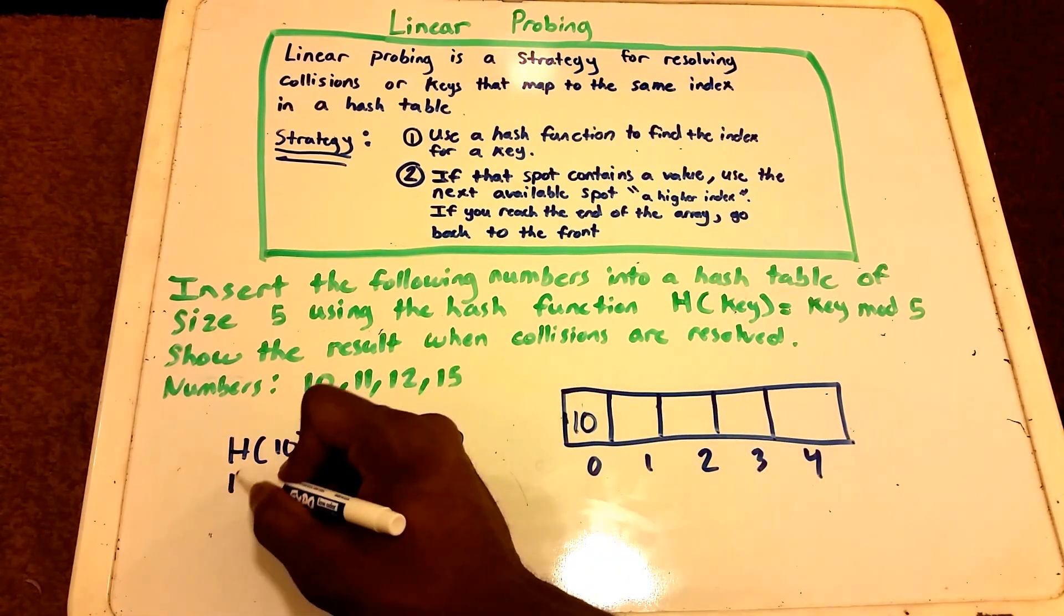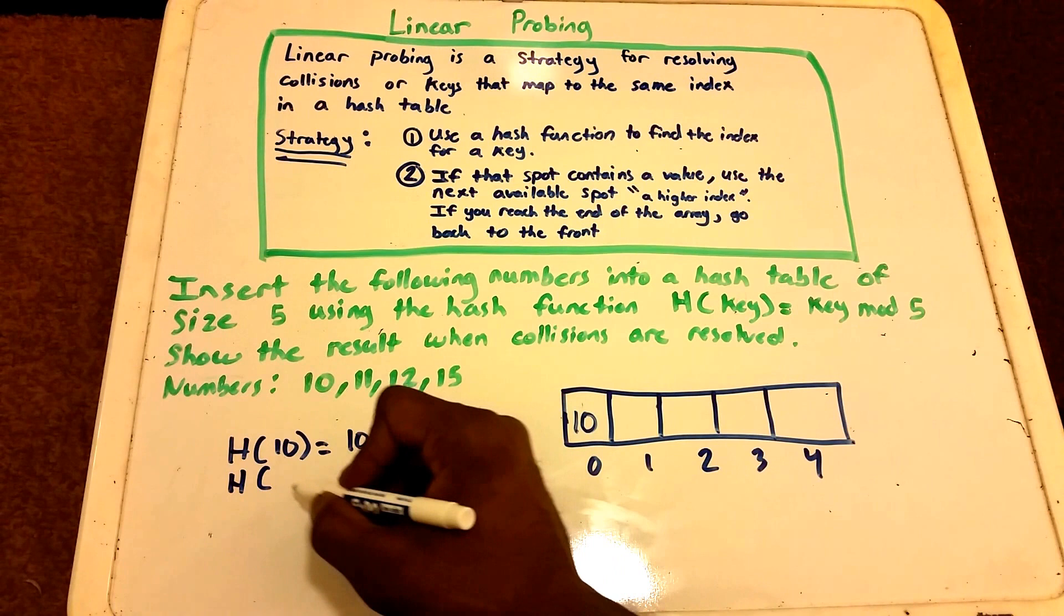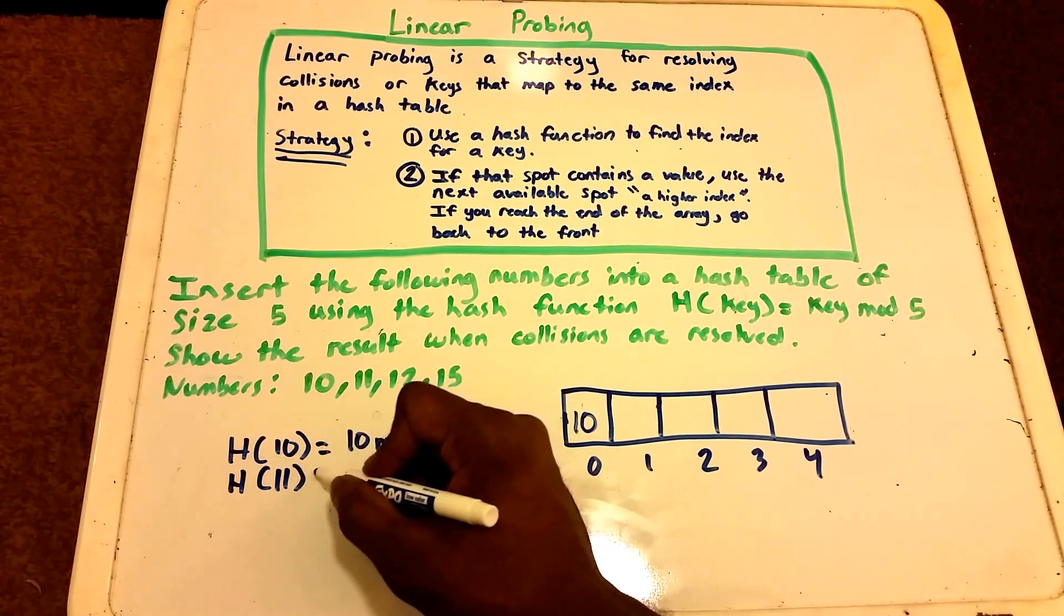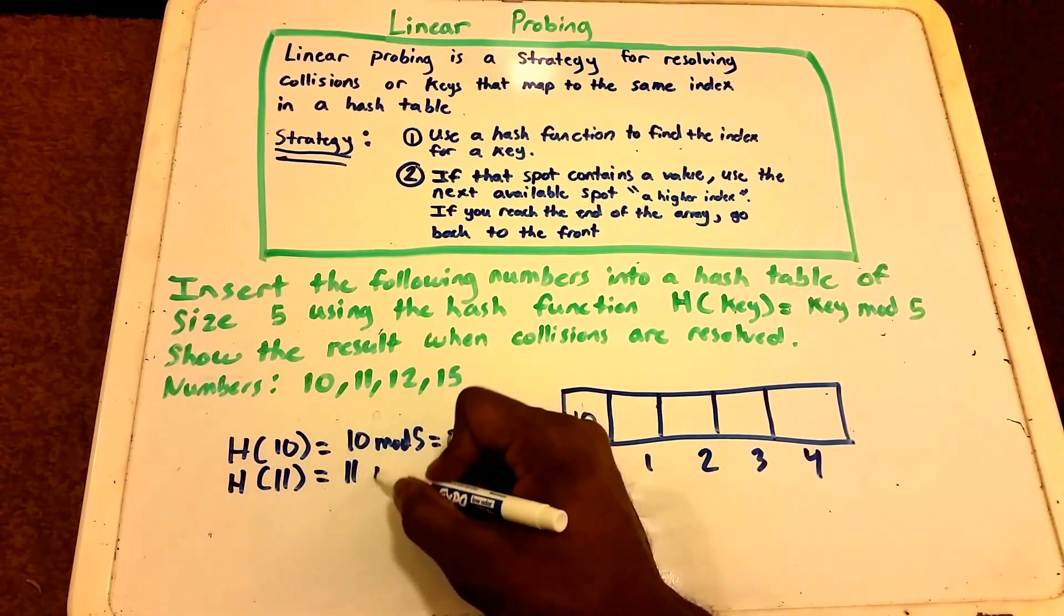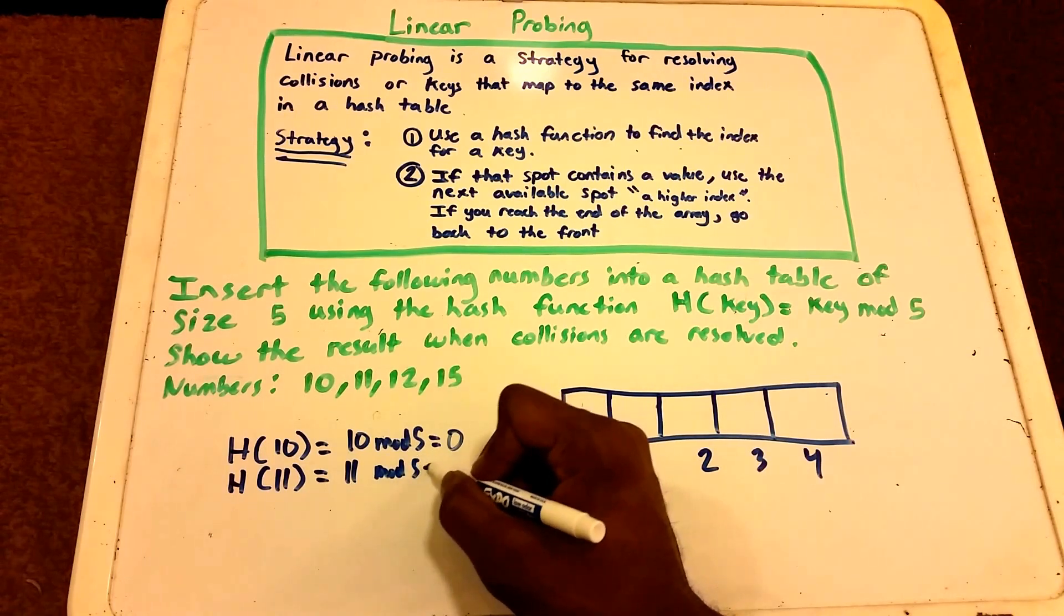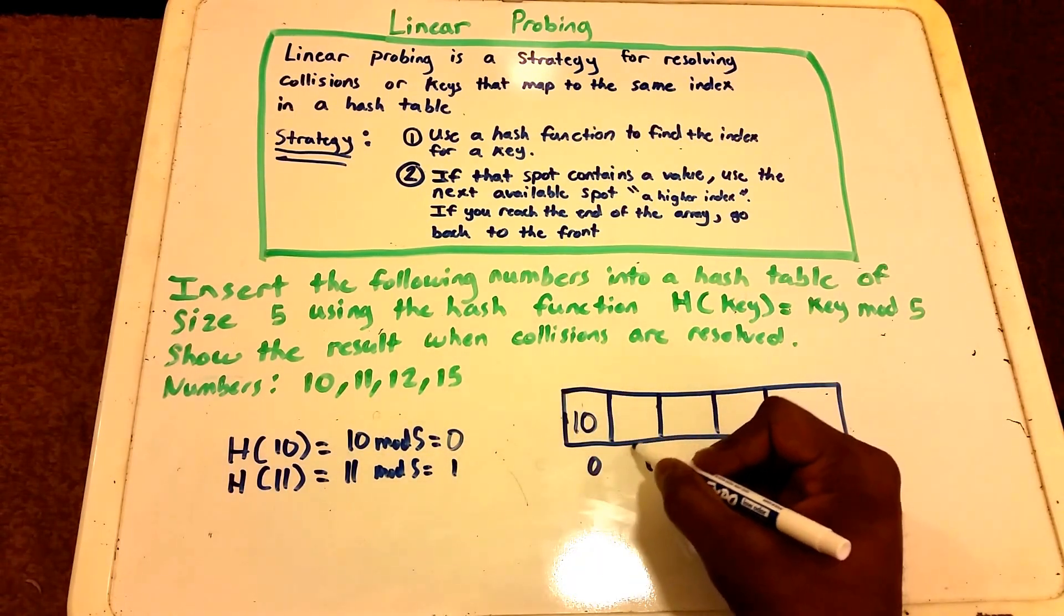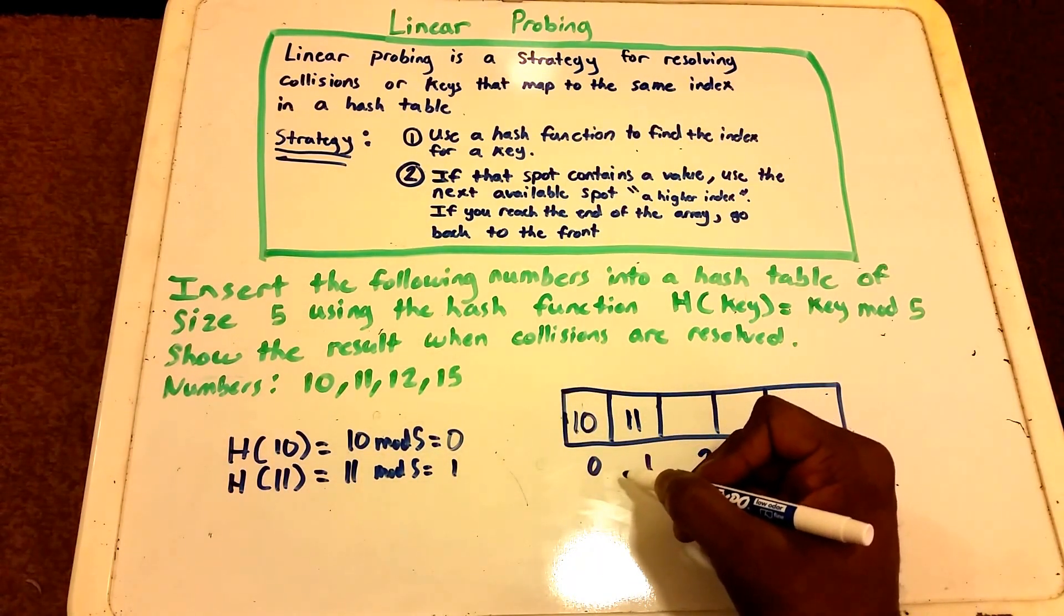All right, so that's good. Next we insert into our hash function the key 11, and we get 11 mod 5 that equals 1, and so in index 1 we place the value 11.